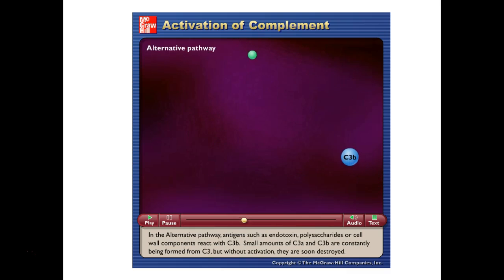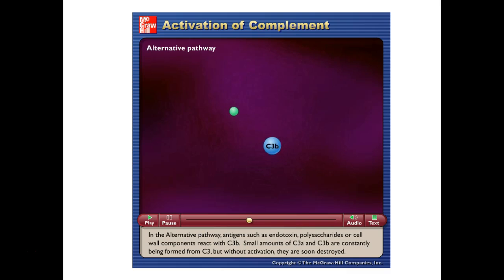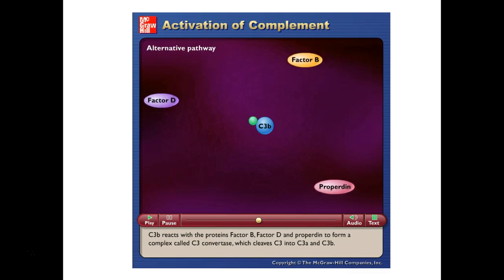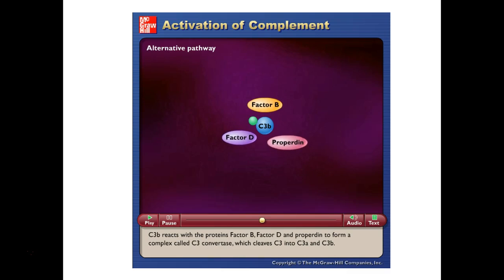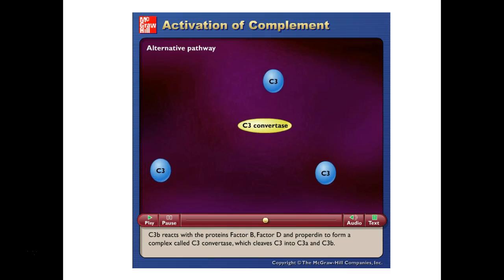In the alternative pathway, antigens such as endotoxin, polysaccharides, or cell wall components react with C3B. Small amounts of C3A and C3B are constantly being formed from C3, but without activation they are soon destroyed. C3B reacts with proteins — factor B, factor D, and properdin — to form a C3-convertase complex, which cleaves C3 into C3A and C3B.